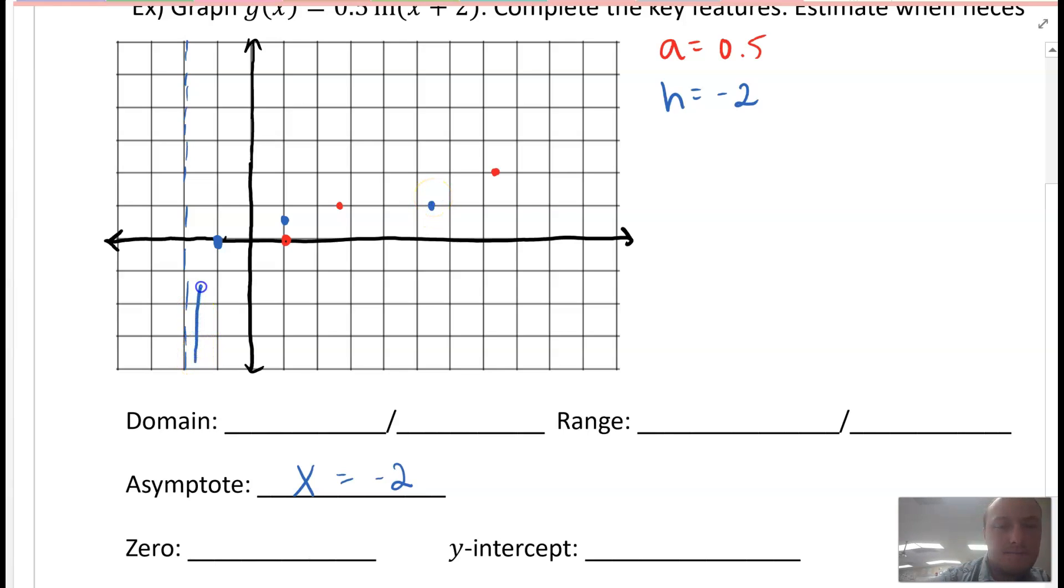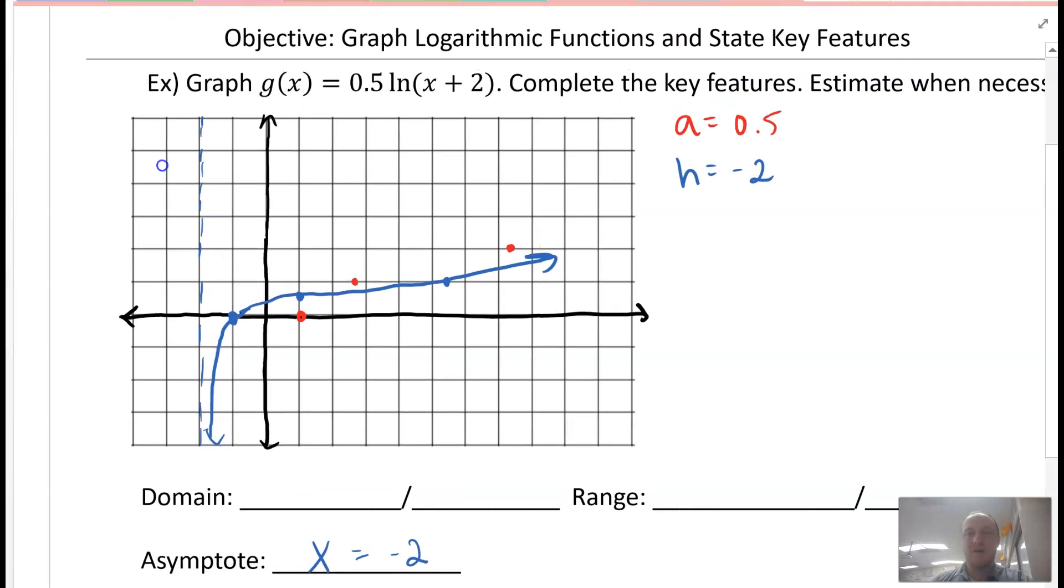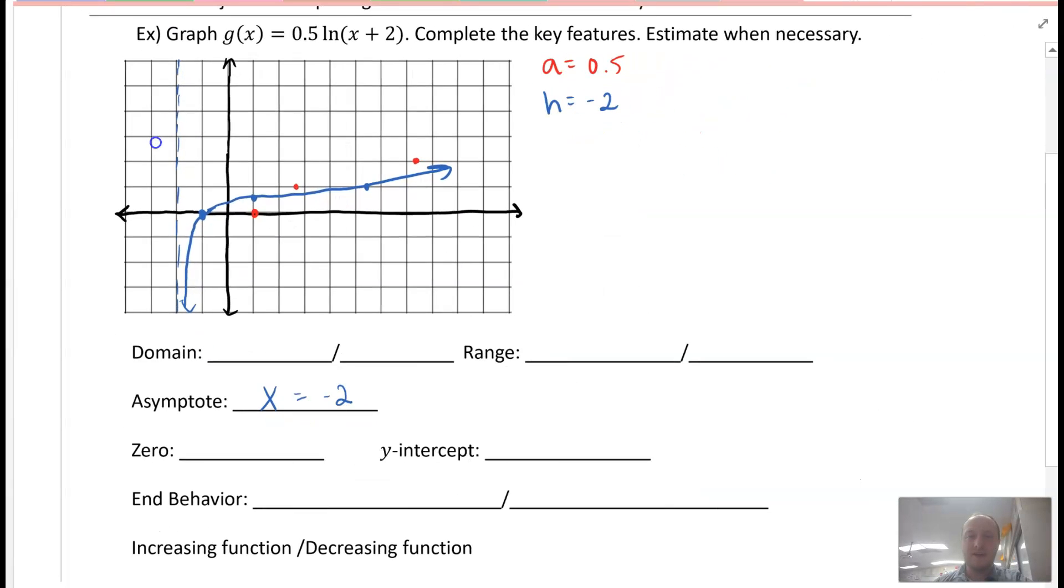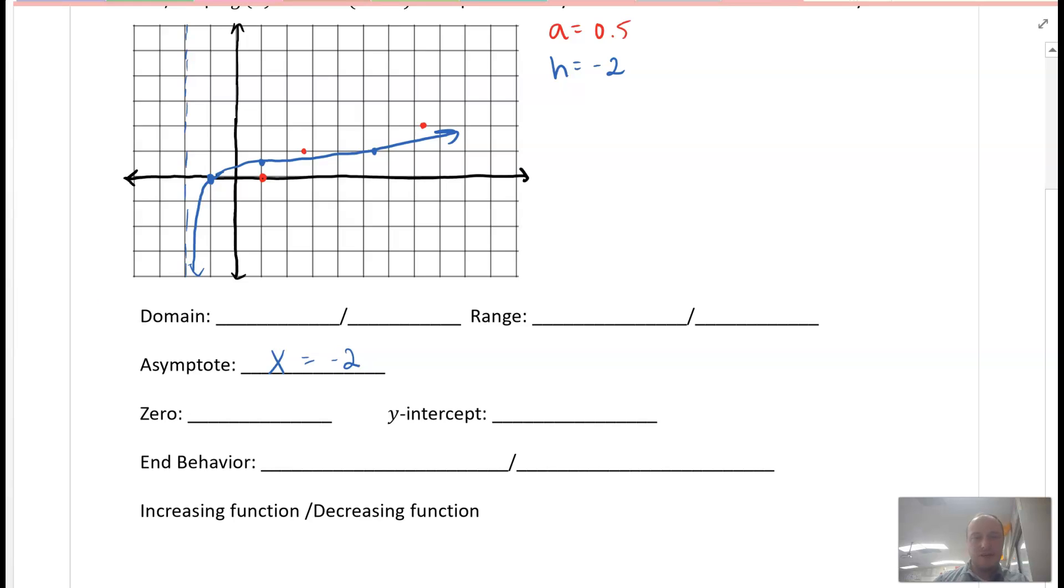I want to make sure I draw a smooth curve. There we go. So there's our function g of x. And now we're going to fill in the key features. Domain of the function - well the domain is dependent upon the asymptote, so x must be greater than negative 2.